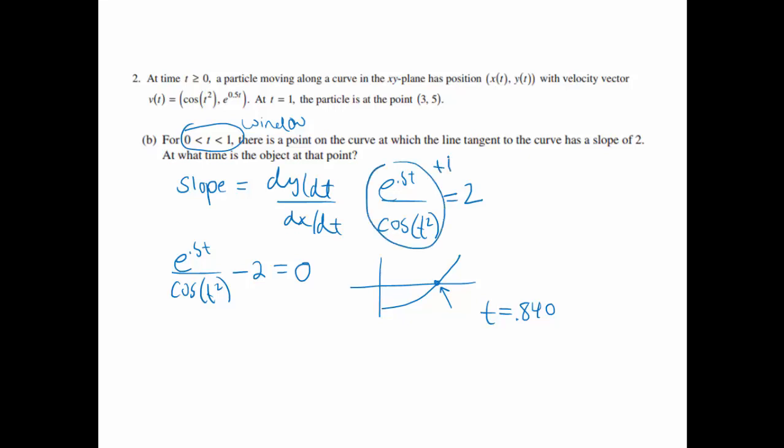And this was worth 2 points if we found the slope in terms of t. So if we found this, this was worth a point. And then if we found the time, we also got our second point.